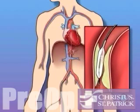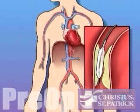Once the tube is in place, a small balloon is briefly inflated in order to widen the narrowed artery. A short length of mesh tubing called a stent is then inserted into the newly widened artery.